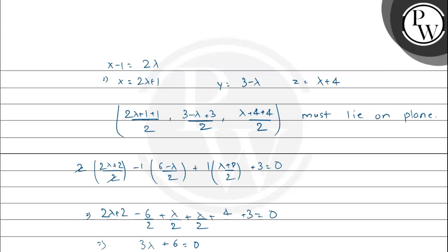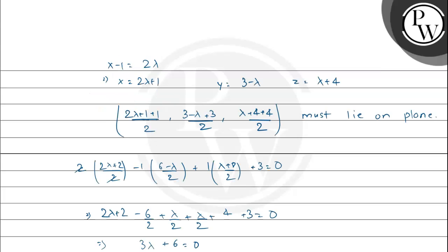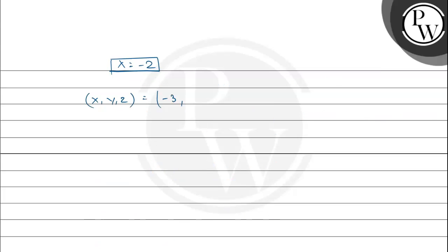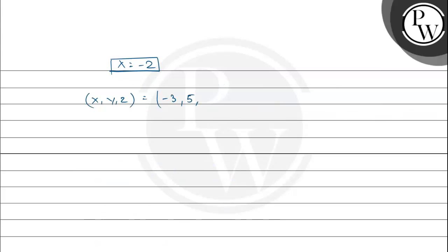To obtain the image, we substitute lambda equals minus 2 into the equations for x, y, z. So x equals 2 lambda plus 1 becomes minus 3, y equals 3 minus lambda becomes 5, and z equals lambda plus 4 becomes 2.